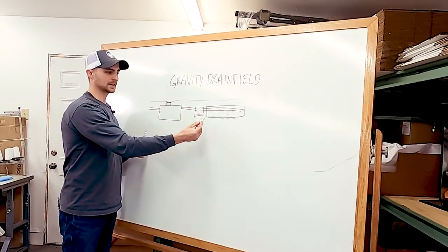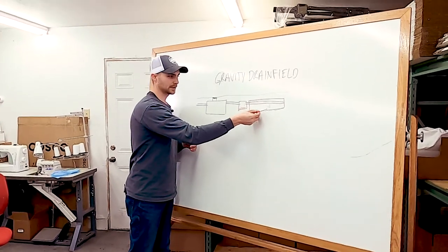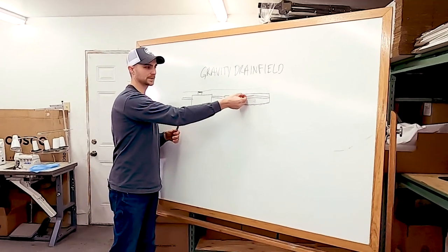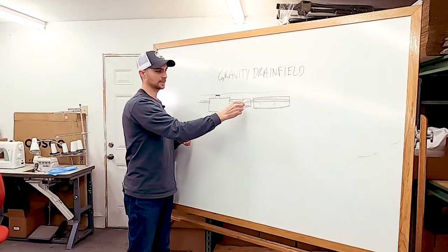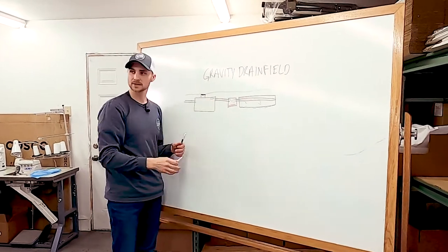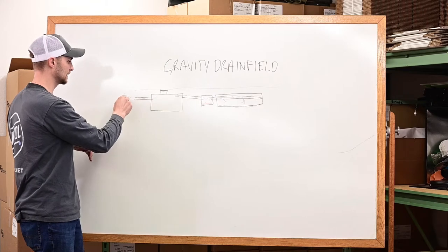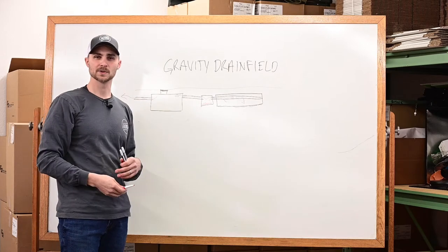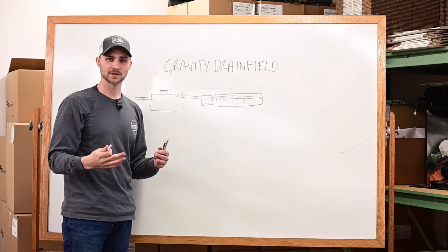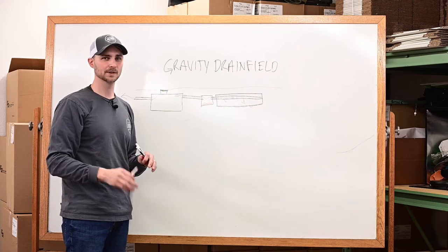So what will happen in that scenario is you may end up getting a plugging layer thick enough to where the water builds up, eventually then backs up into your septic tank. The water level in your septic tank is going to rise up and eventually back up into your house and potentially flood it in the floor drain. It's just a really nasty problem that you don't want to encounter.